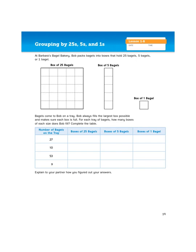So I'm going to read the story problem prompt at the top. At Barbara's Bagel Bakery, Bob packs bagels into boxes that hold 25 bagels, 5 bagels, or 1 bagel. Bagels come to Bob on a tray. Bob always fills the largest box possible and makes sure each box is full. For each tray of bagels, how many boxes of each size does Bob fill? Complete the table.